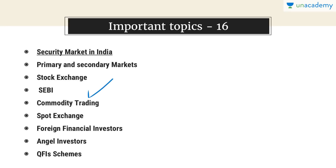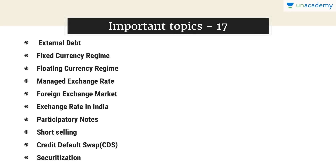Commodity trading, spot exchange, foreign financial investors, angel investors, and QFI scheme — all very important. Then external debt, fixed currency regime, floating currency regime, managed exchange rate, foreign exchange market, exchange rate in India, what is short selling, what is bear and bull, IPO, angel investors, QFI scheme, and Registered Foreign Portfolio Investor.